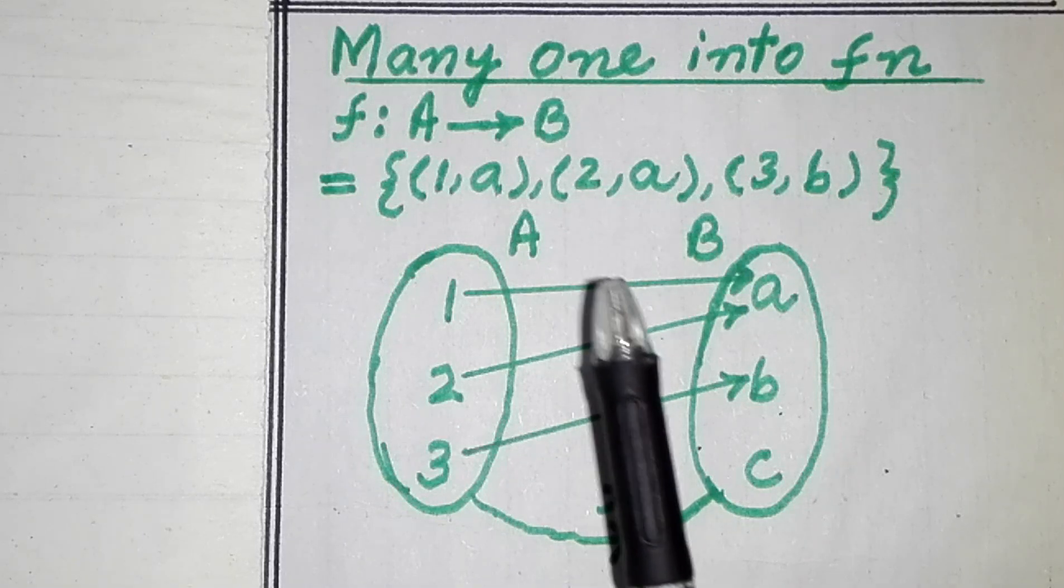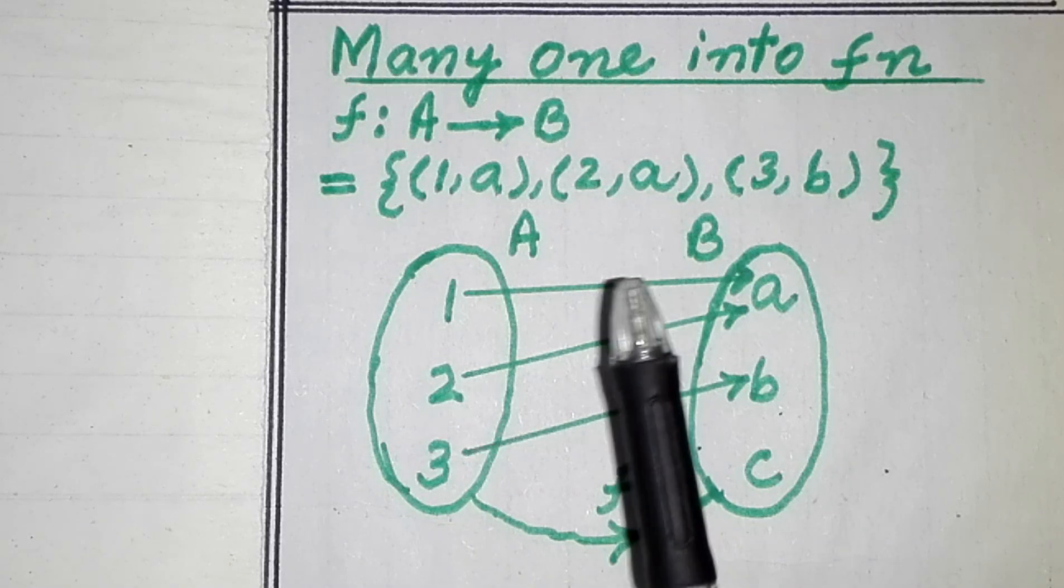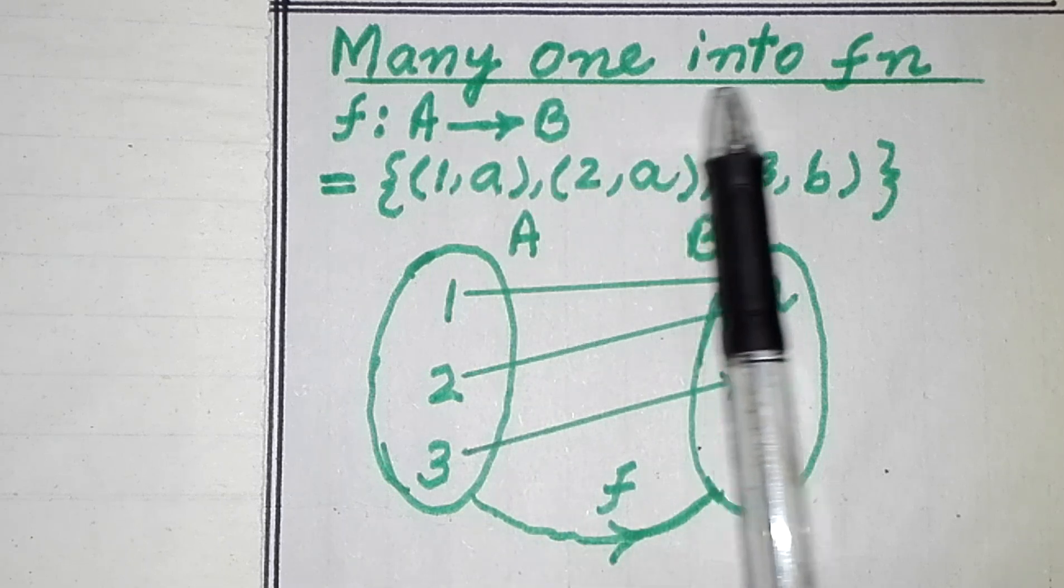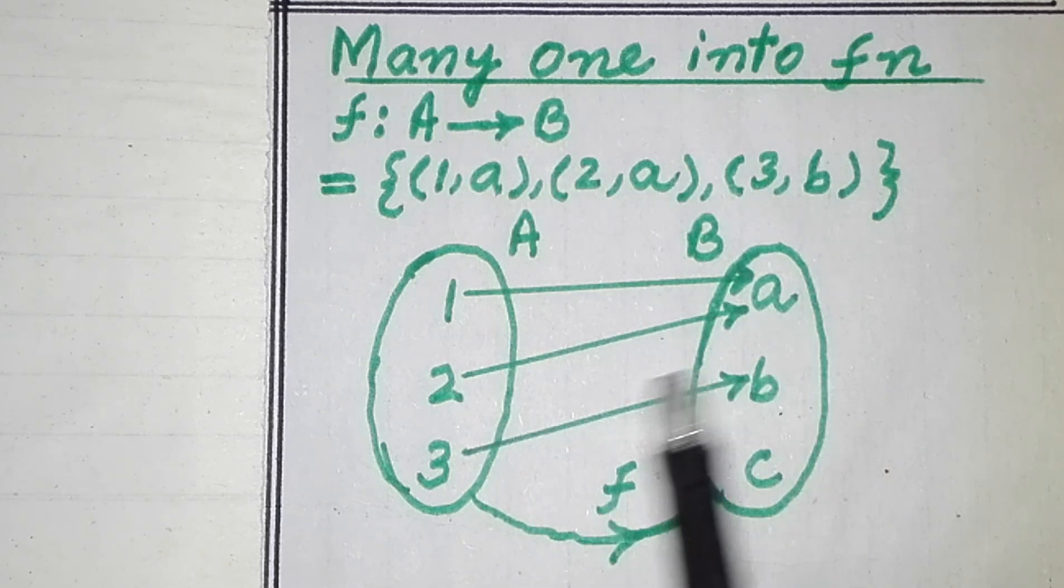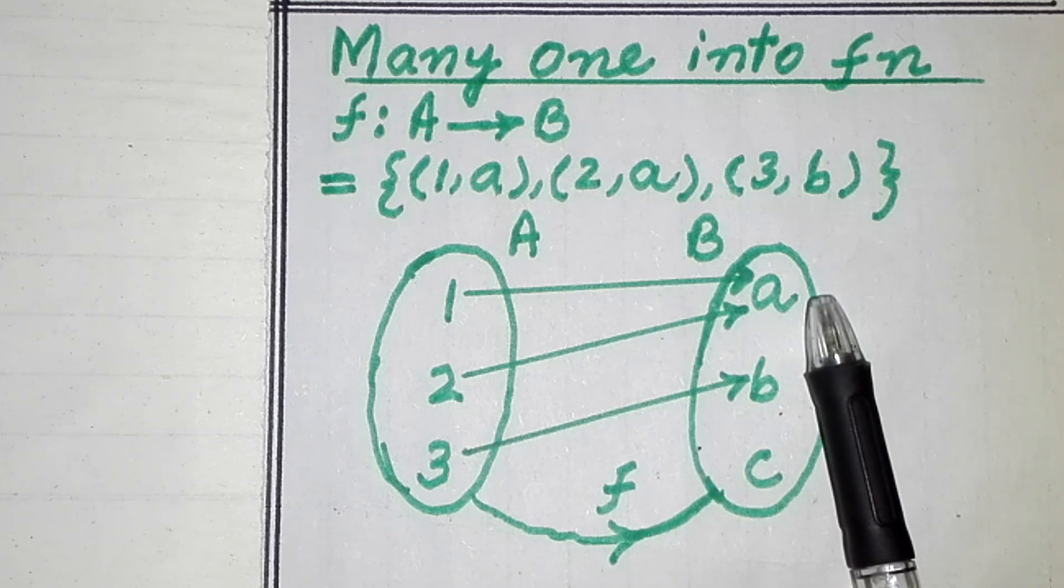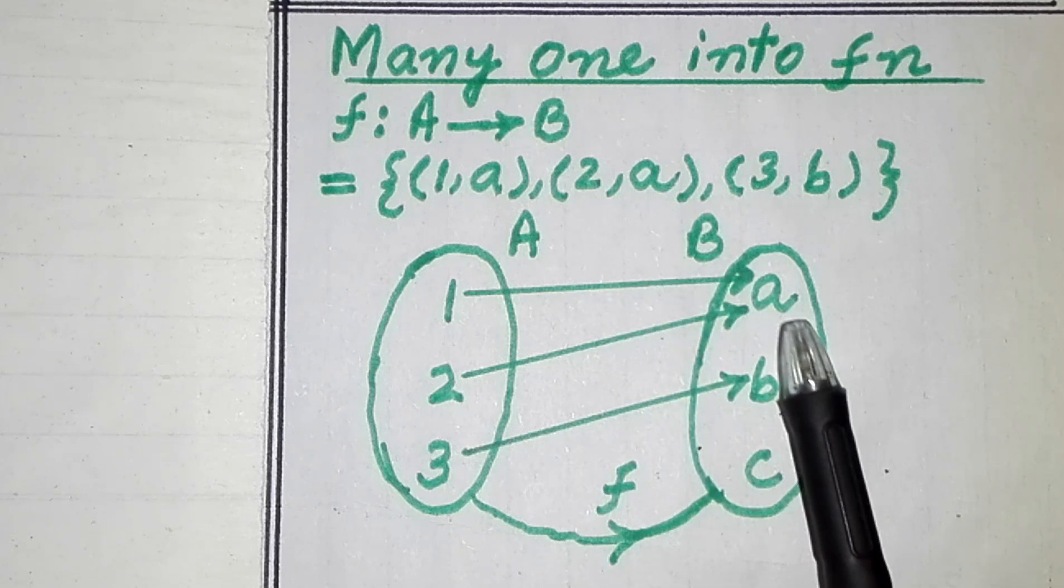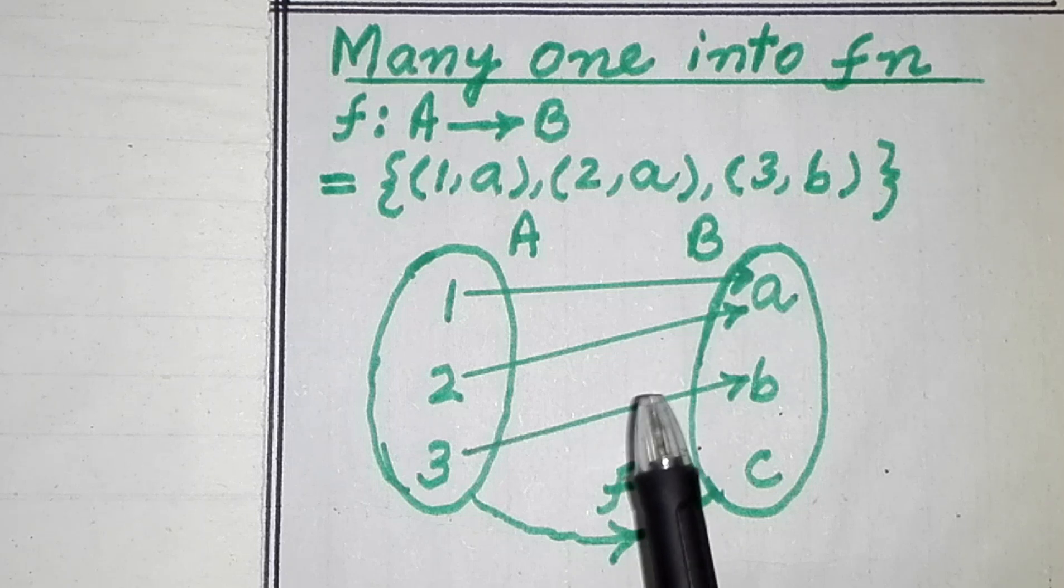So dear students, if a function is both many-one and into, then it is called a many-one into function. Now look here, these straight lines represent ordered pairs, and here the second element 'a' of ordered pairs is repeated. So this is a many-one function.